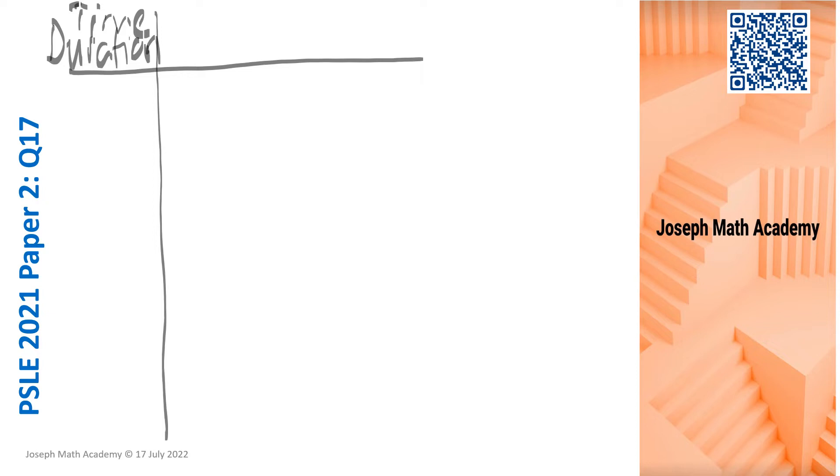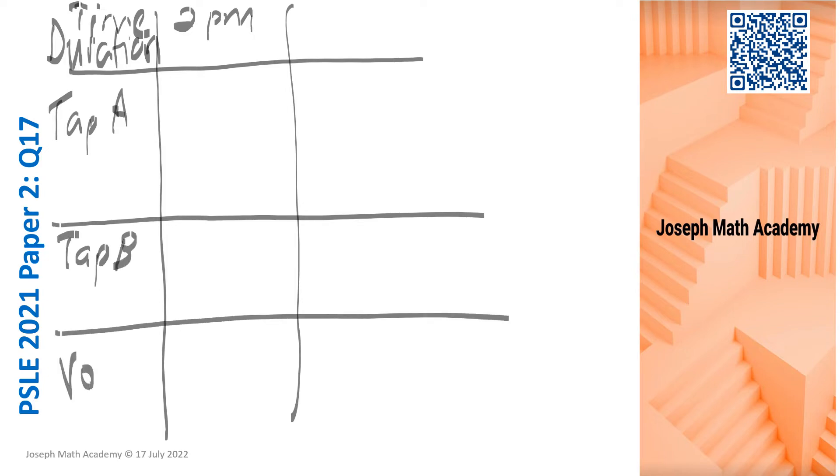In the question, we know that at 2 o'clock, at 2pm, I'm going to draw one line here. Tab A was turned on, so I have tab A here. I have tab B here. And I have the volume of water in the tank. Now, we know that the rate of tab A is 4.2 liters per minute. So at 2pm, the tap is turned on, so no volume. There's no water yet. No action from tab A. No action from tab B.